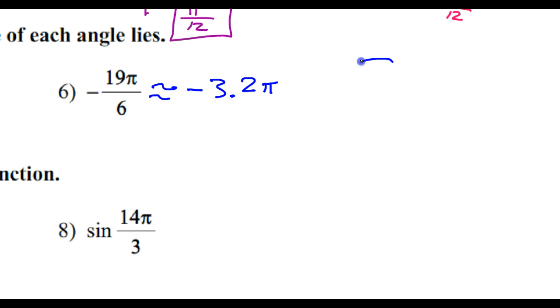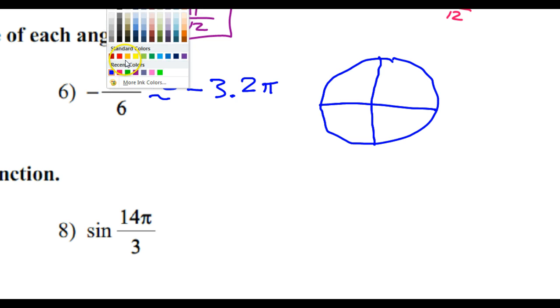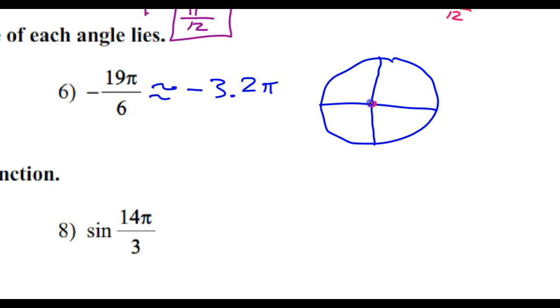So let's draw a picture and see where we land. And so here's my unit circle. Here's pi. And here is pi over 2, if anybody cares. So, standard position starts positive x-axis. Because this is a negative angle, I will travel clockwise.